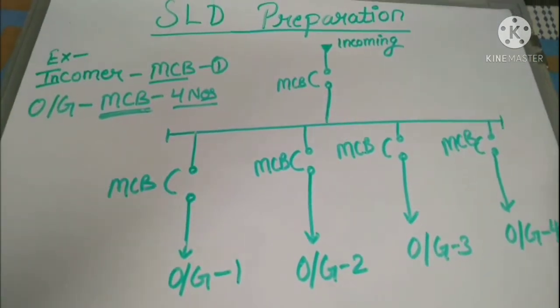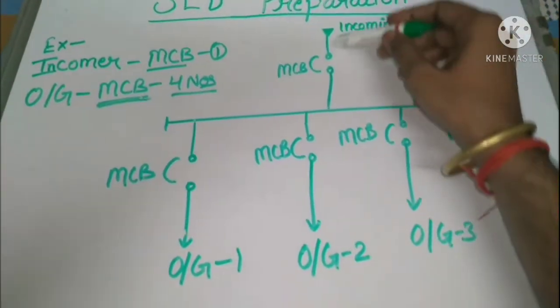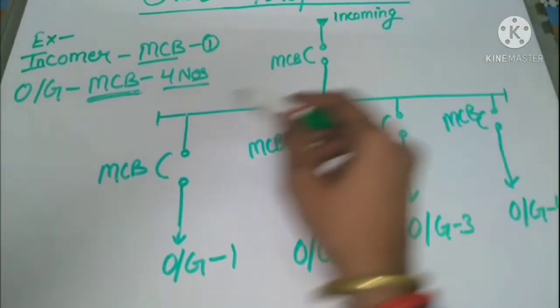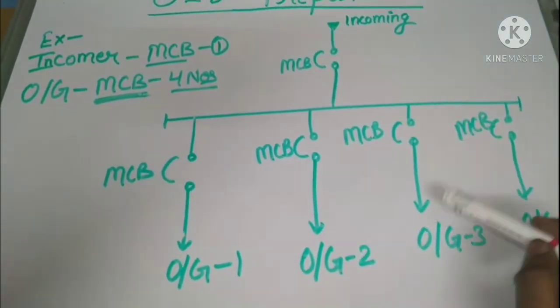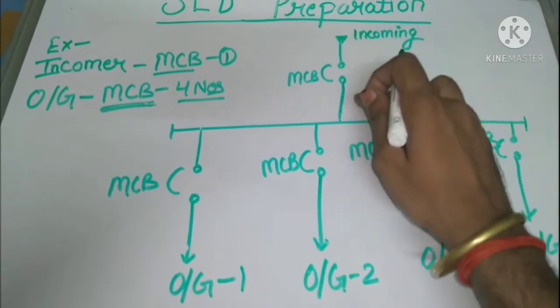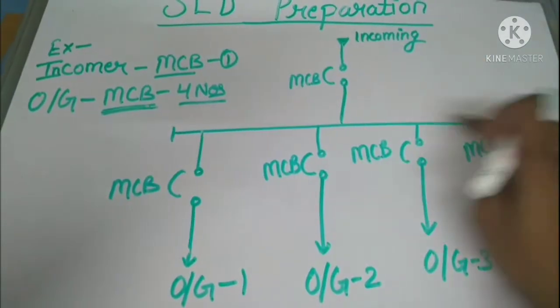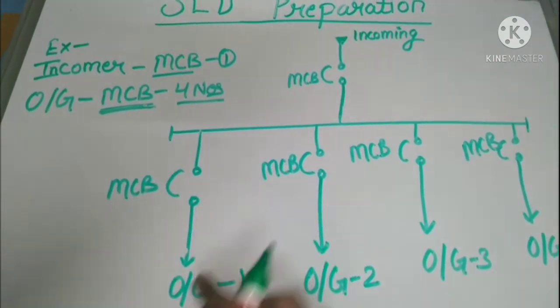So what was the definition of SLD? SLD, single line diagram is a diagram that uses lines. We are using line here to represent the path. We are representing the path of the circuit here. This is incoming. It is going to the horizontal bus bar. Then after the MCB, it is going to the outlet.